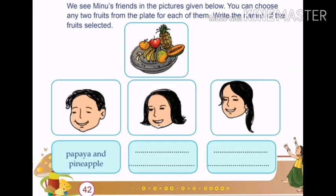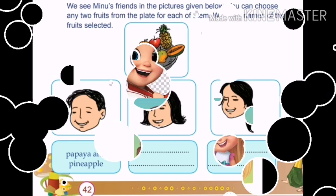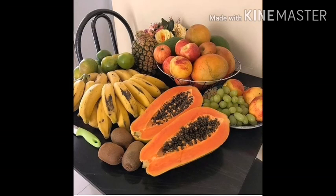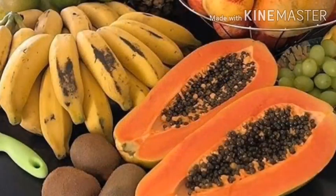At the same time, Minu's friends also came to her house. That is our today's activity. I will ask the question: We see Minu's friends in the picture given below. You can choose any two fruits from the plate for each of them.